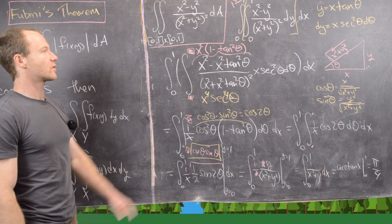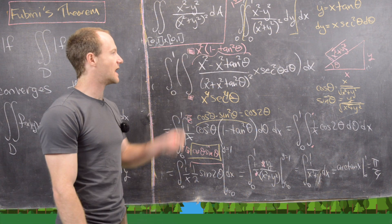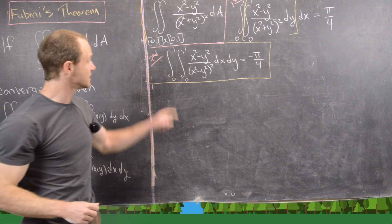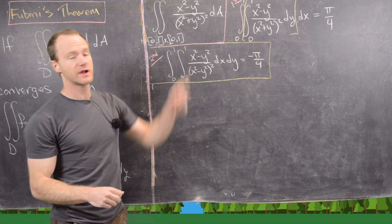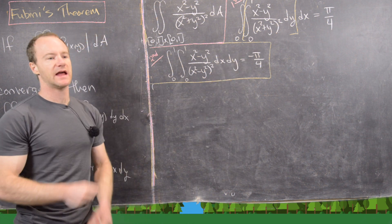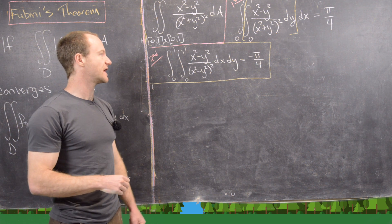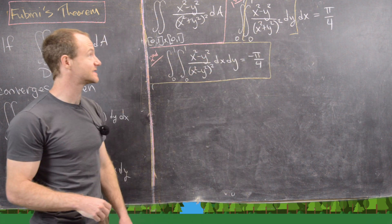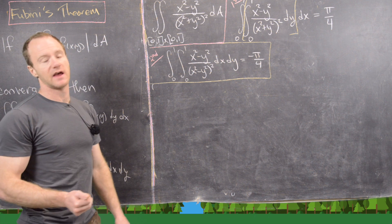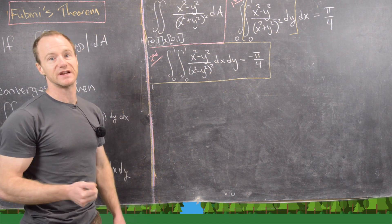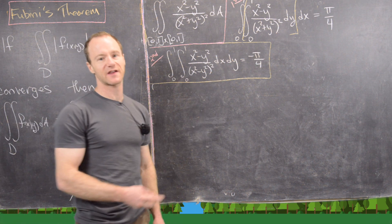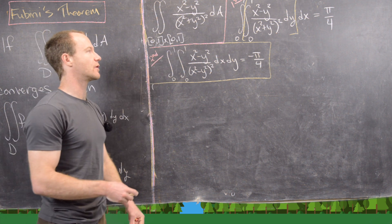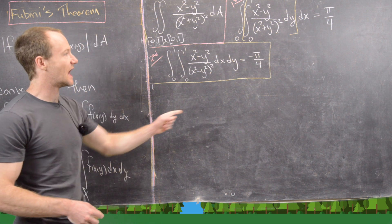So if we do this iterated integral — y first, then x — we get π/4. Now if we take the order of integration in reverse, we don't get π/4; we get −π/4. This should be pretty clear because reversing the order is equivalent to swapping x's and y's, which negates the numerator x² − y², giving the negative of the original integral. We've already changed the order and gotten a different value, so something is going wrong.